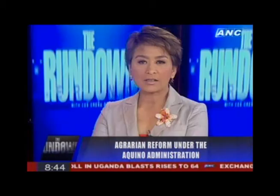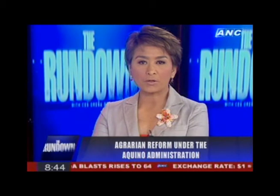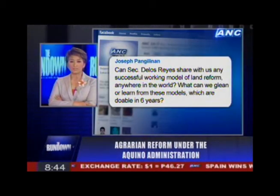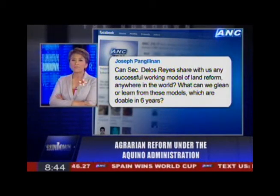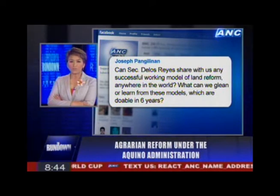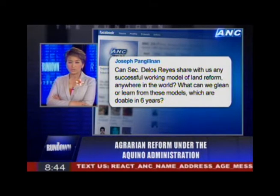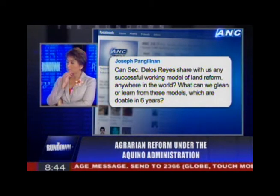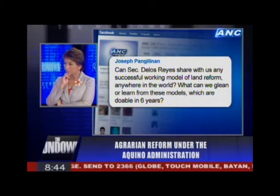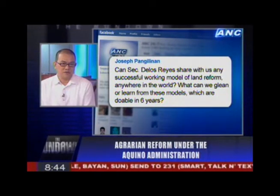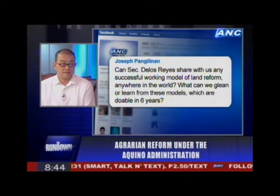Joseph Pangilinan asks: CARL, CARP, and KARP all seem to have been unsustainable. Can you share any successful model of land reform anywhere in the world which is doable in six years? Is that a correct judgment to make? It's tough doing agrarian reform or land reform. They said Taiwan — that's the secret of how Taiwan became successful.